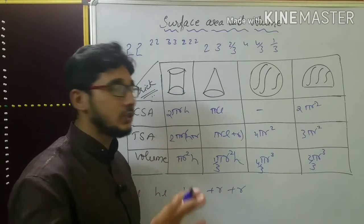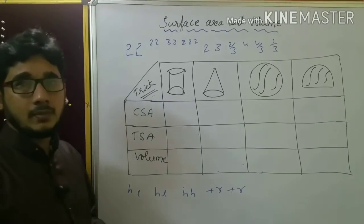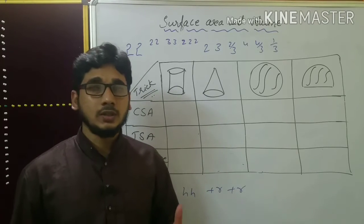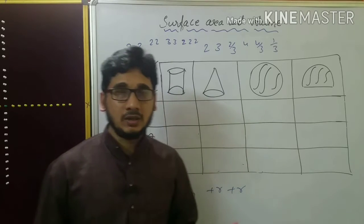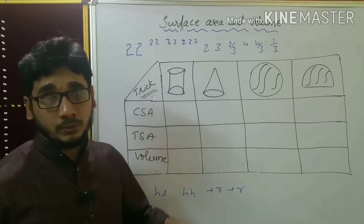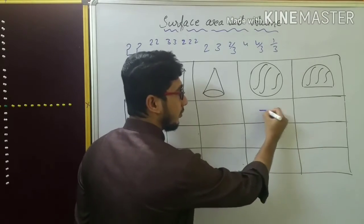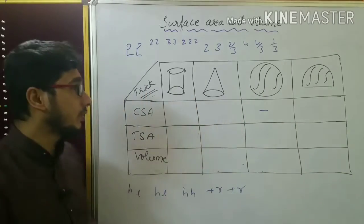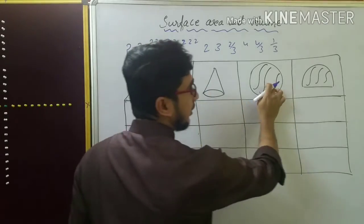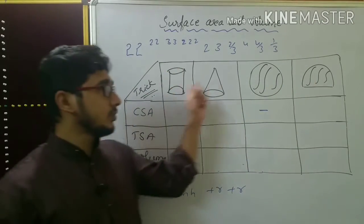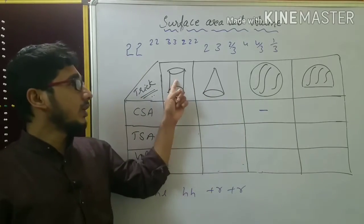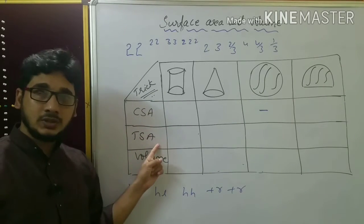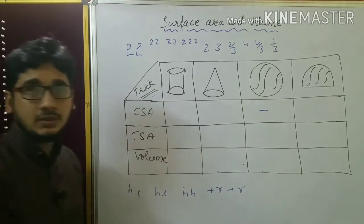Let me go slowly so you will understand. When the exams are near, you don't have time, so this trick helps. I am not writing shape names because if you see the images you can remember more. The shapes are: cylinder, cone, sphere, and hemisphere. The columns are: curved surface area, total surface area, and volume.